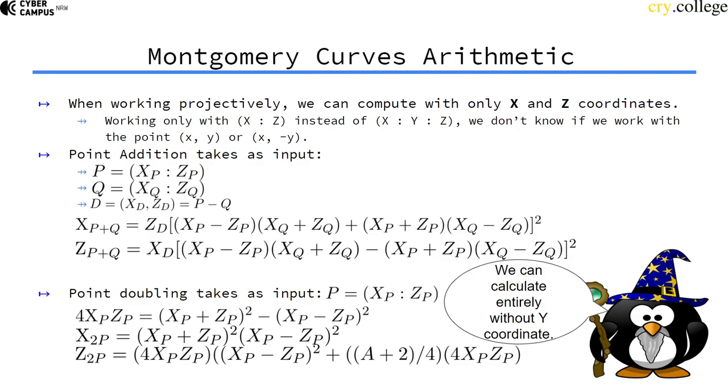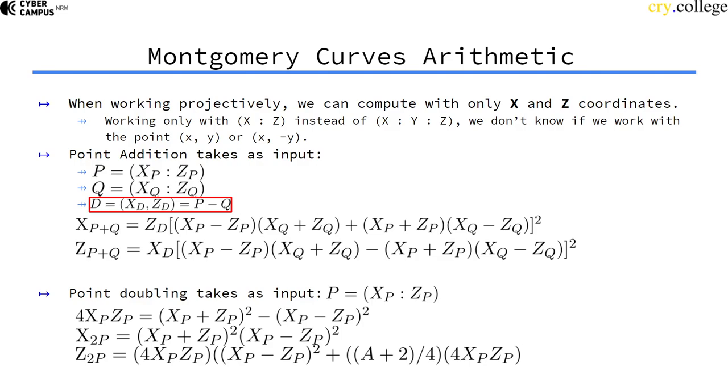Since we're working projectively we even have this point at infinity at our disposal. But we have this difference here that we need for point addition. As you can see, we use the Z and the X value of the difference of those two points in our equation formula. So that's a bit odd because then we first have to compute the difference so we can add the points together.